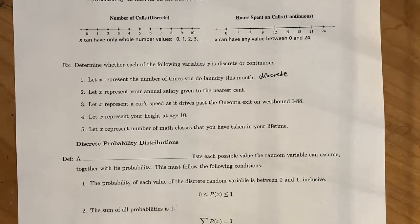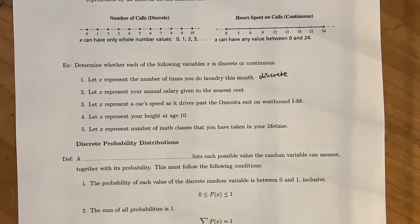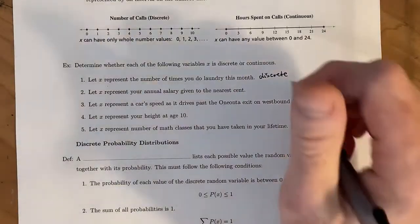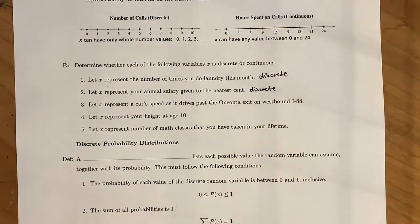We're going to let x represent your annual salary given to the nearest cent. So there's still going to be a lot of possible outcomes here, but the fact that there's little tiny jumps from one cent to the next cent essentially means that this is a discrete random variable.